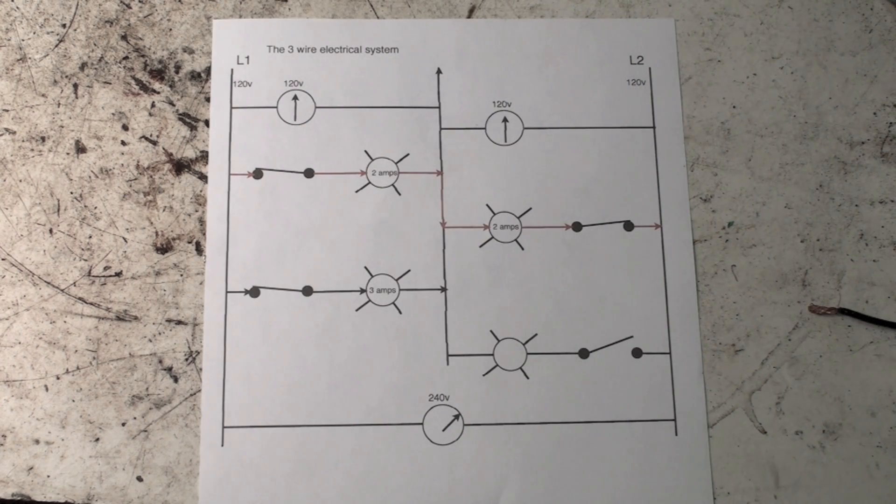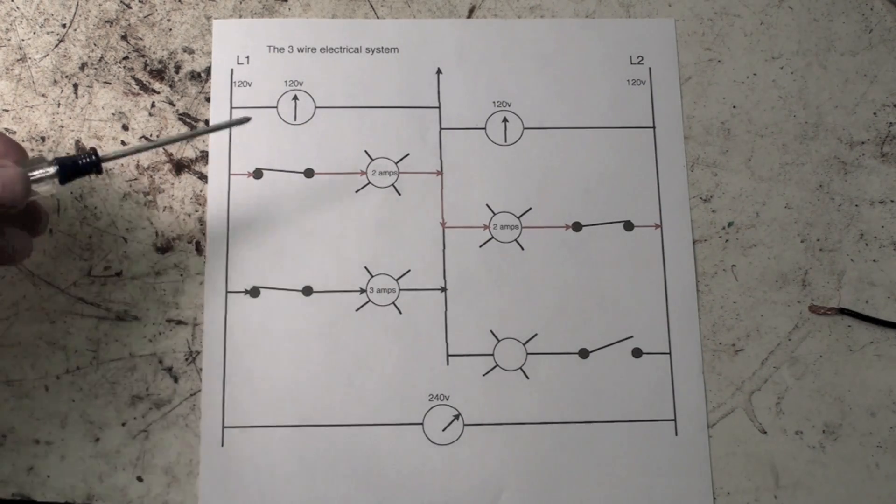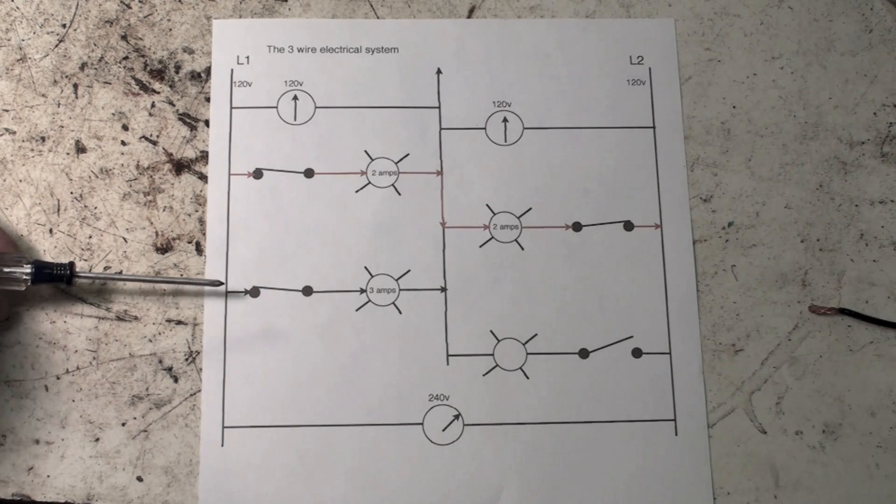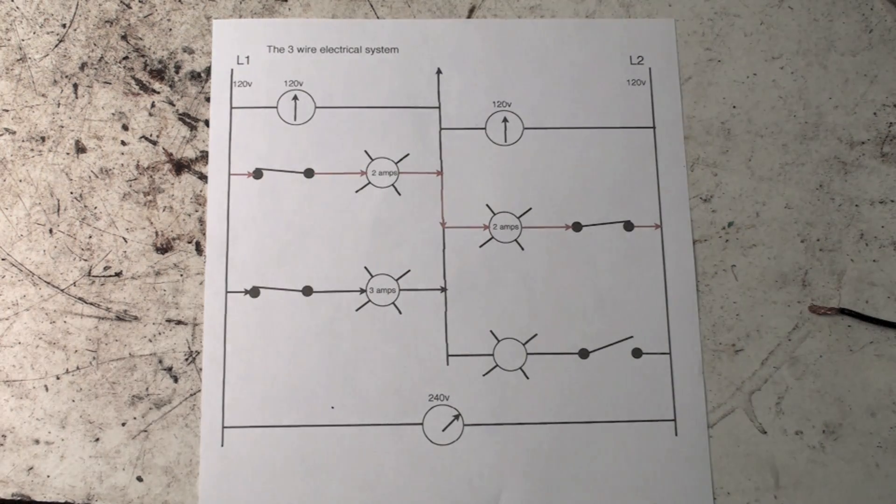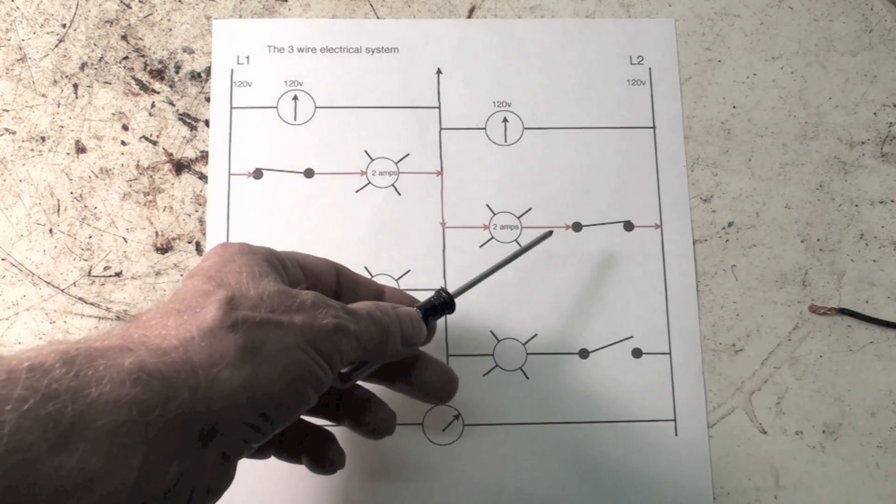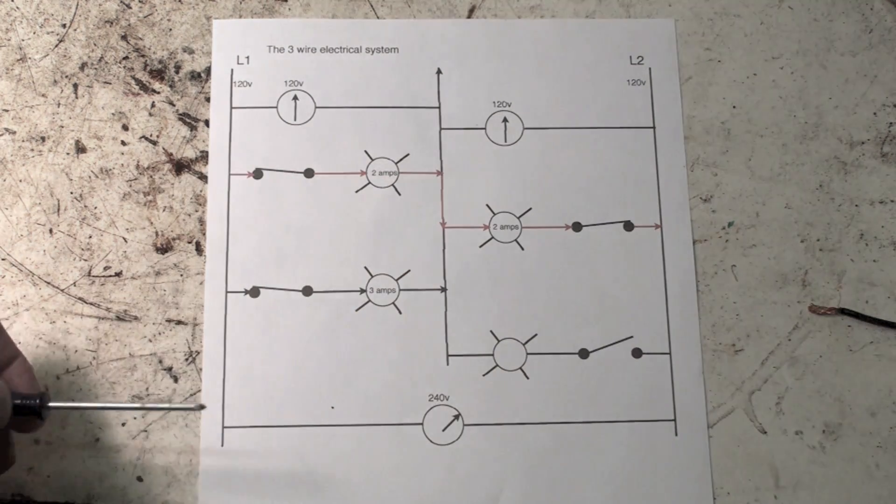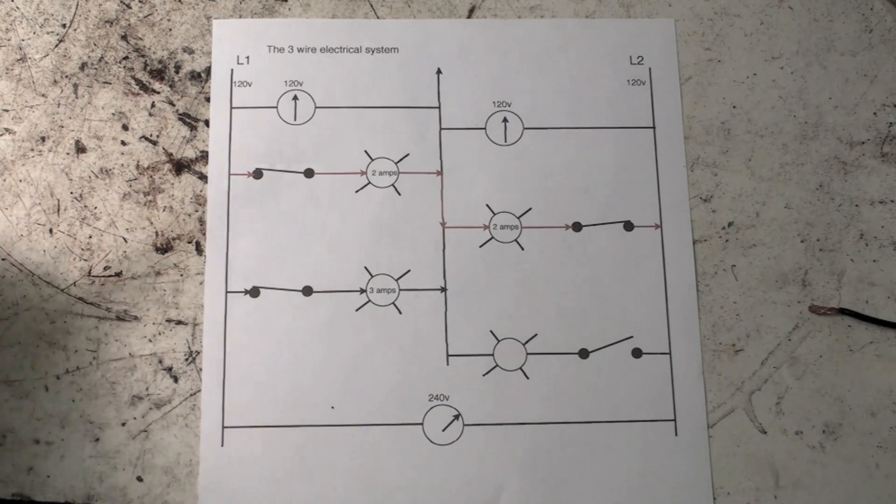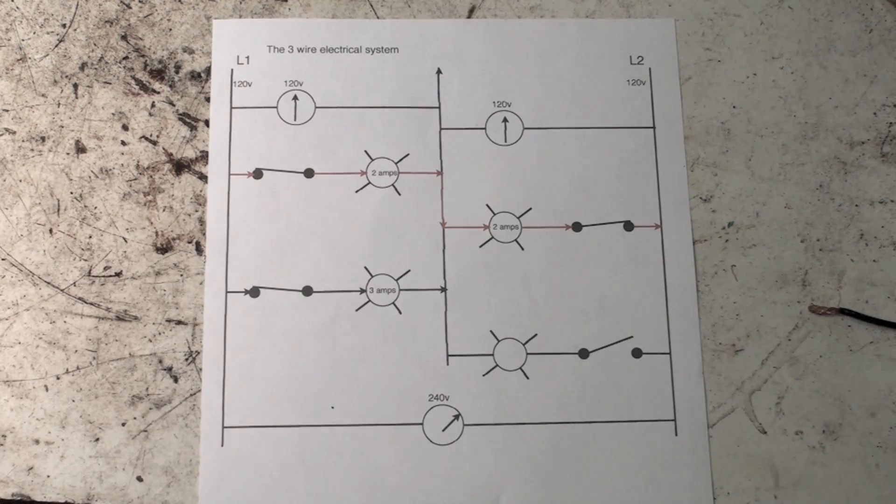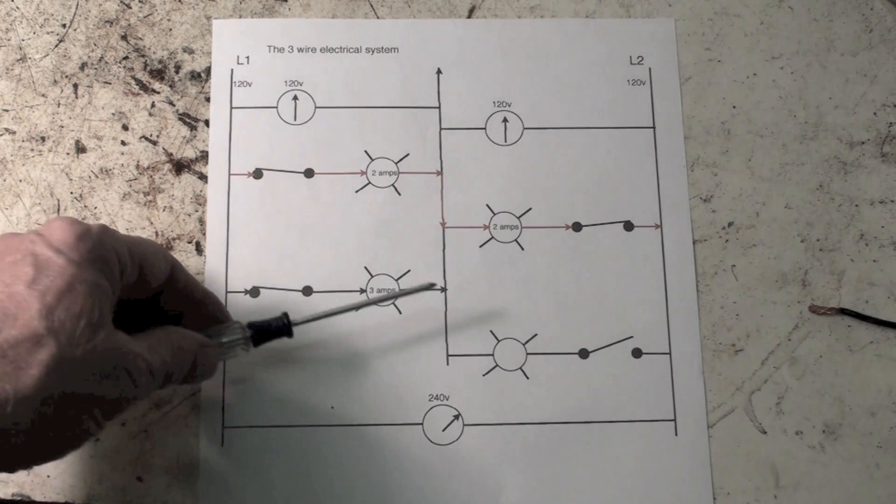If I go down here, I've got a 3-amp load, and I've got another load over here but it's open. So where does that three amps go? It can't go through here because this is already going through there, so it goes to the neutral line. Now if there are other loads in this panel that can accommodate that 3-amp load, then it does.